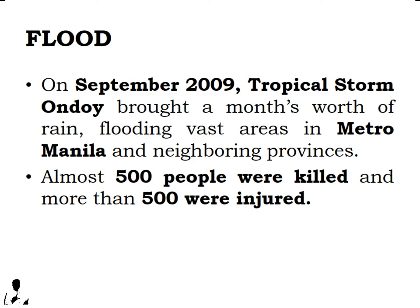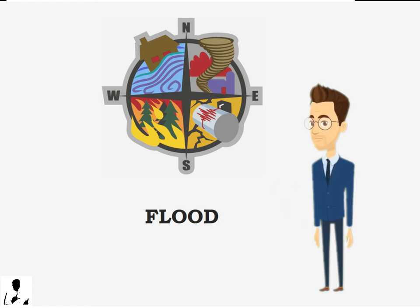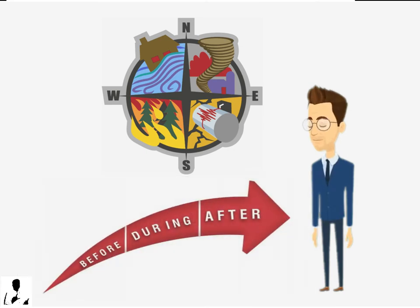Did you know that in September 2009, Tropical Storm Ondoy brought a month's worth of rain, flooding vast areas in Metro Manila and neighboring provinces? Almost 500 people were killed and more than 500 were injured. As part of disaster preparedness, citizens should plan and practice what to do in the event of a flood in order to properly respond before, during, and after a flood.